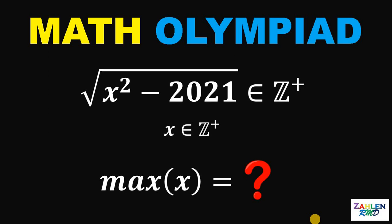If x and square root of x squared minus 2021 are positive integers, then find the maximum value of x.